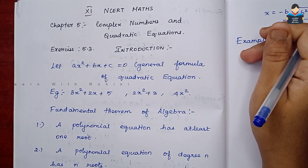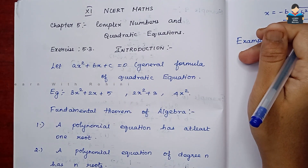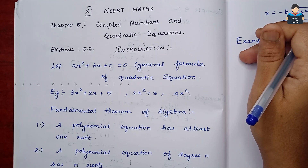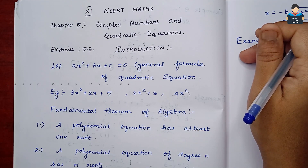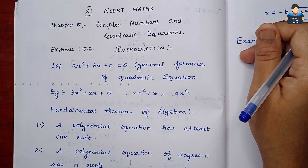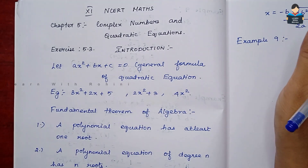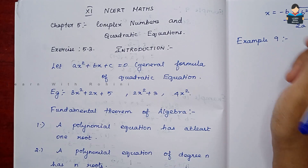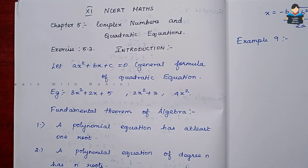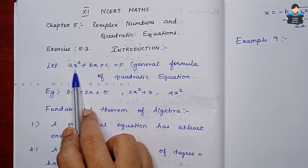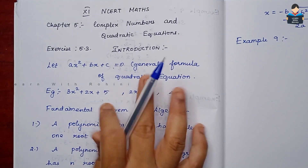Hello everyone, welcome to our channel. This is the Class 11 NCERT Maths Chapter 5 — Complex Numbers and Quadratic Equations, Exercise 5.3 introduction video. In this introduction video, we will first cover quadratic equations. The general formula for a quadratic equation is ax² + bx + c.